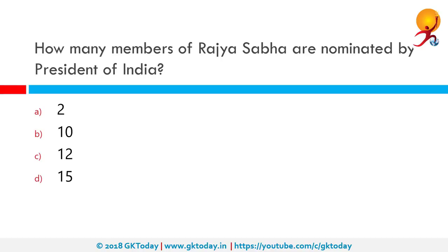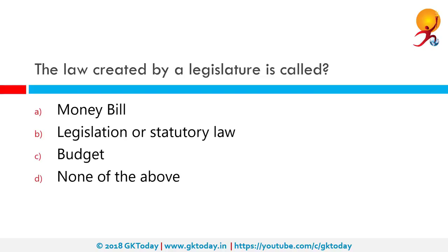How many members of Rajya Sabha are nominated by the President of India? The correct answer is 12. Rajya Sabha is the upper house of Parliament representing states and union territories. Its membership is fixed to a maximum of 250 members, of which 238 are elected by representatives of states and union territories, while 12 members are nominated by the President on account of their excellence in literature, science, art or social service.